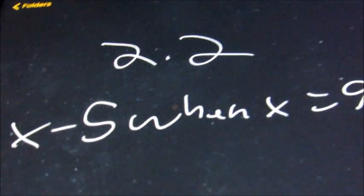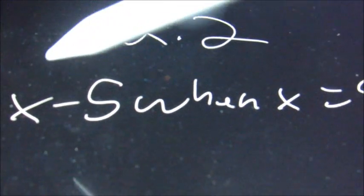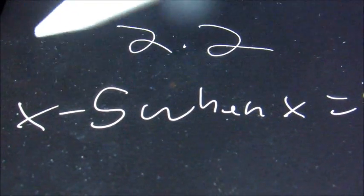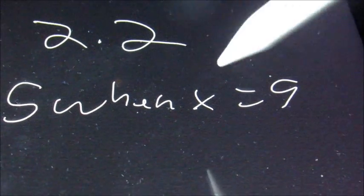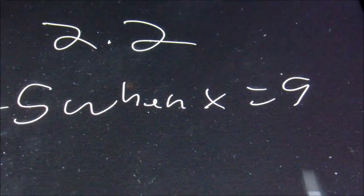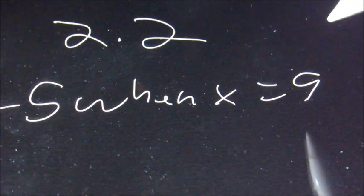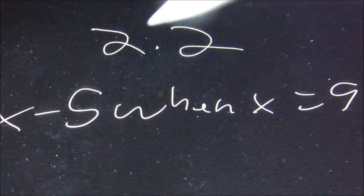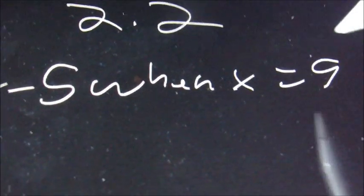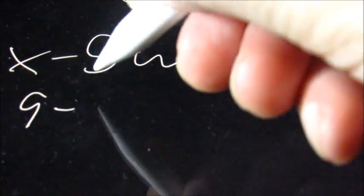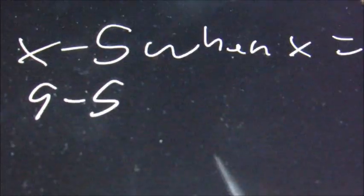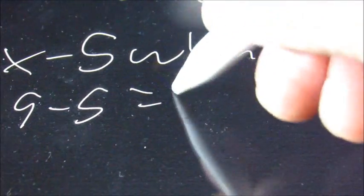The first part is going to be something like: they're going to give you x minus 5 and figure that out when x equals 9. So all we're going to do is every time we see an x, put a 9 in. And here there's only one, so it's going to be 9 minus 5. Figure that out and it is 4.